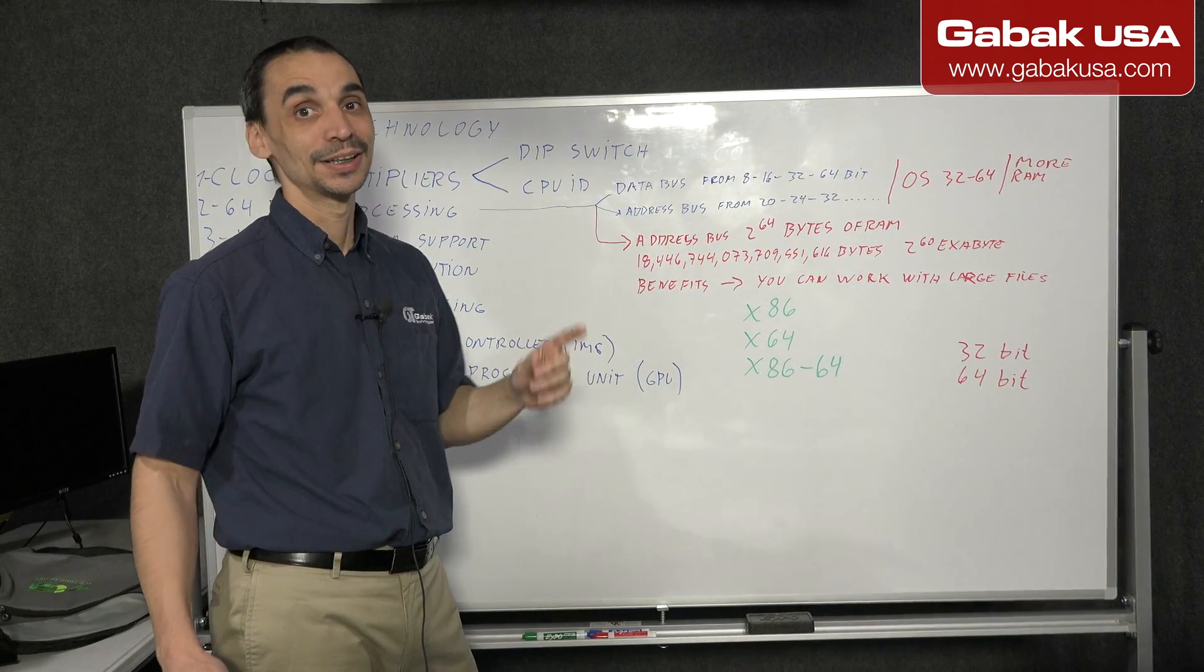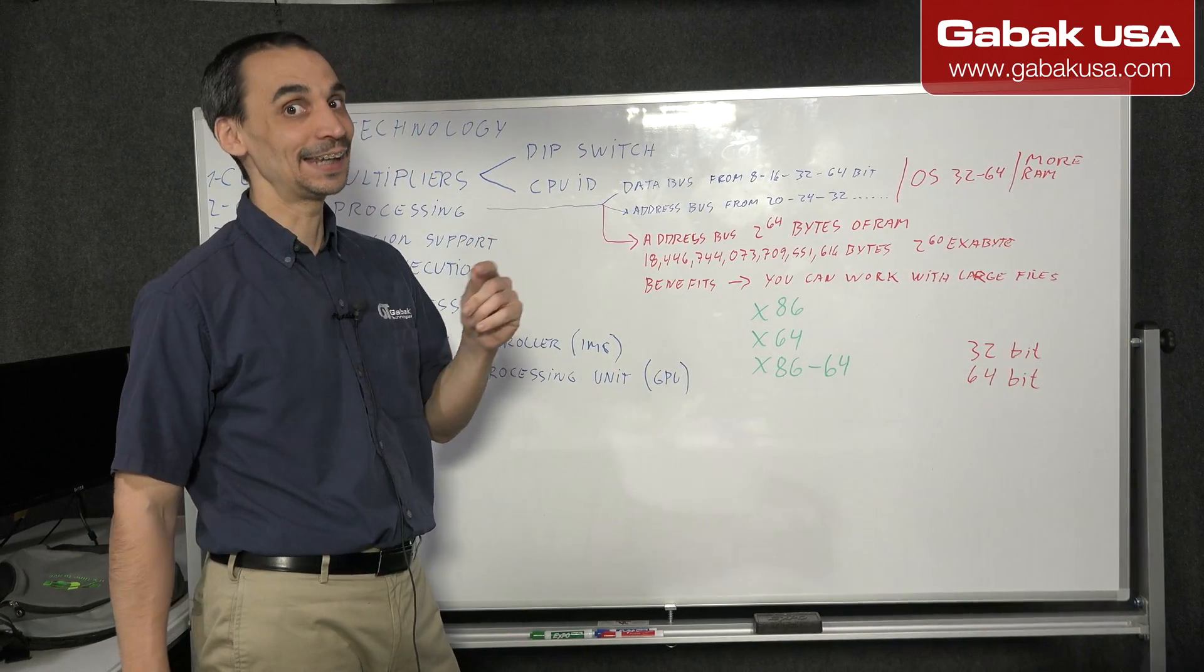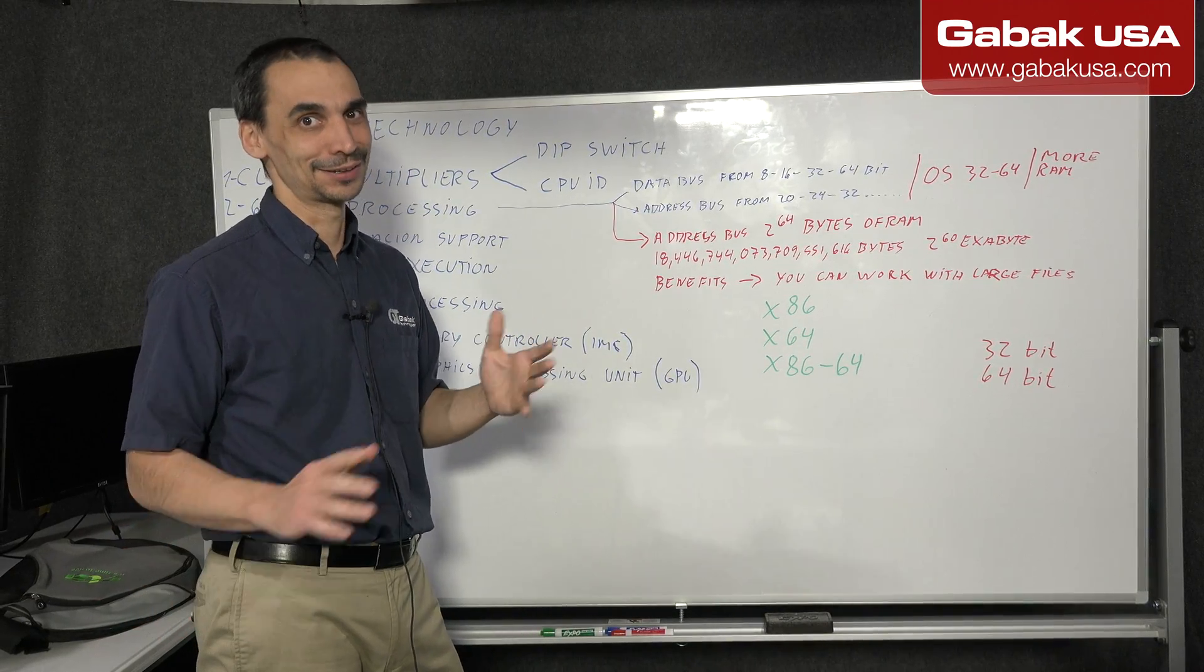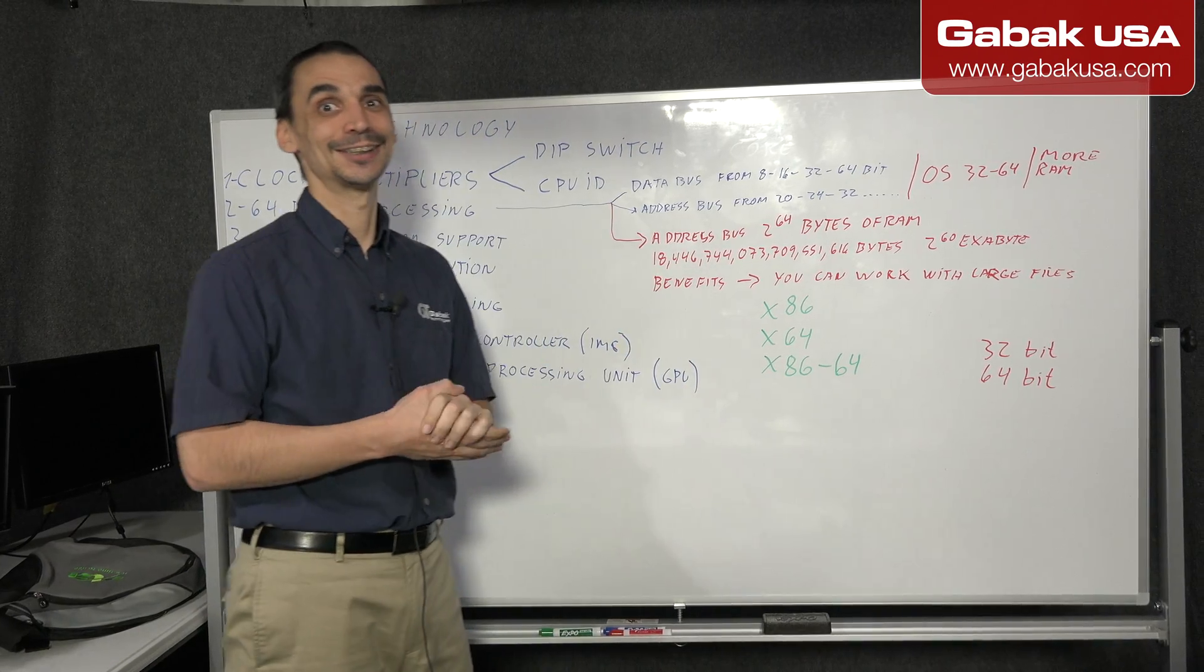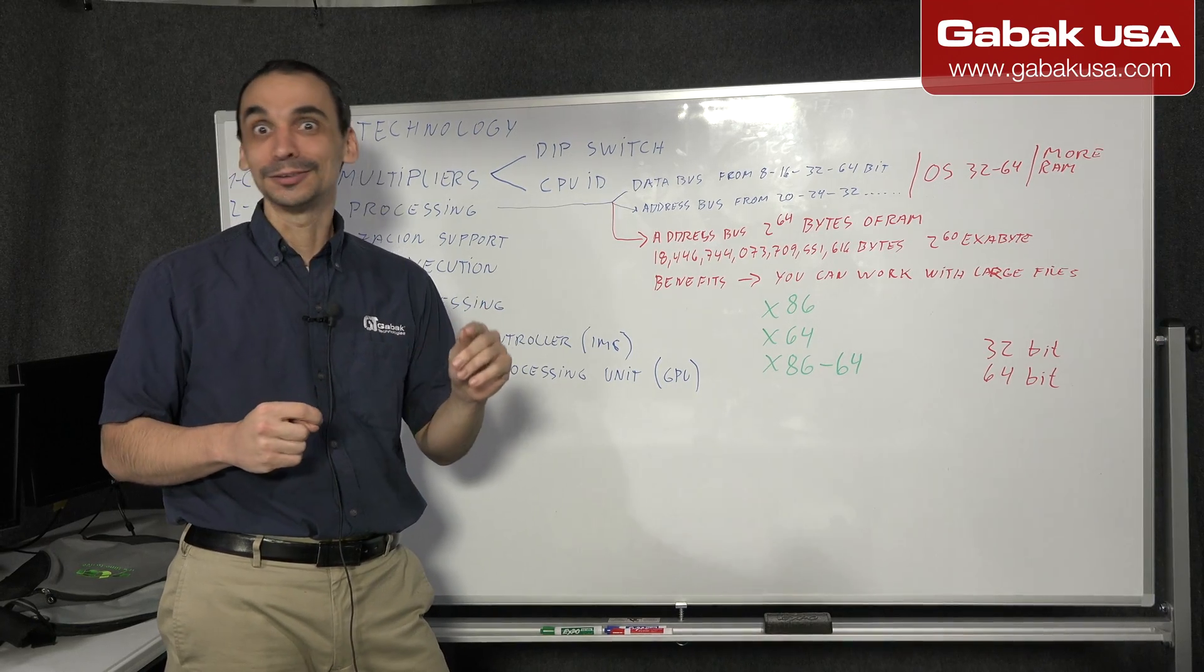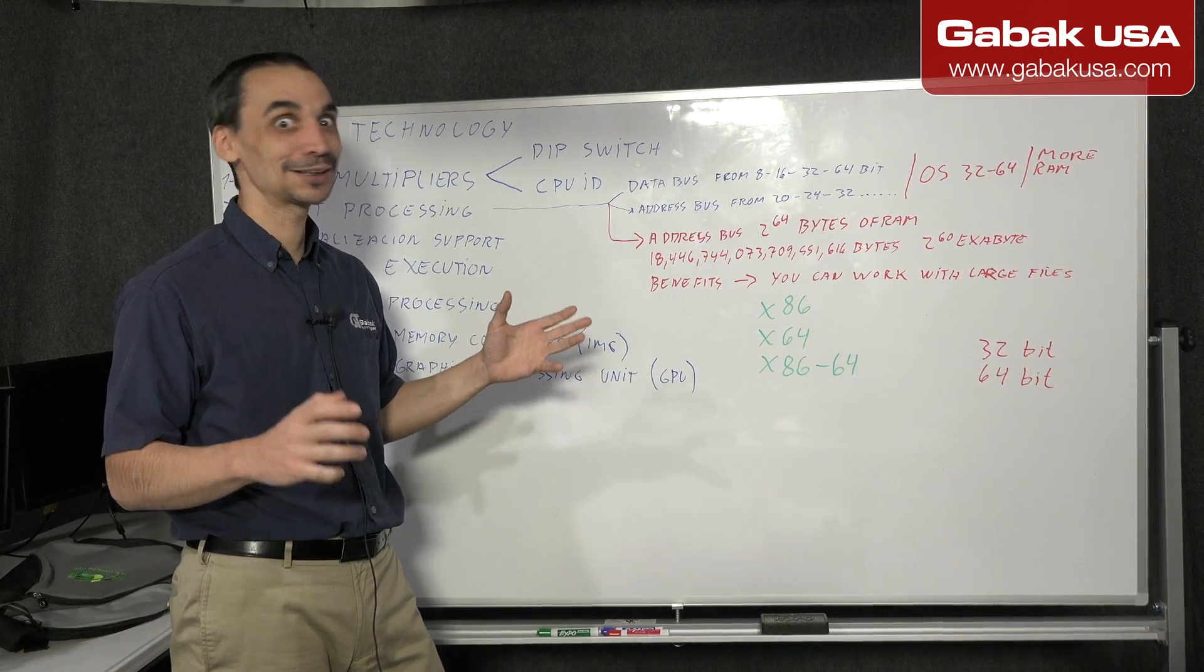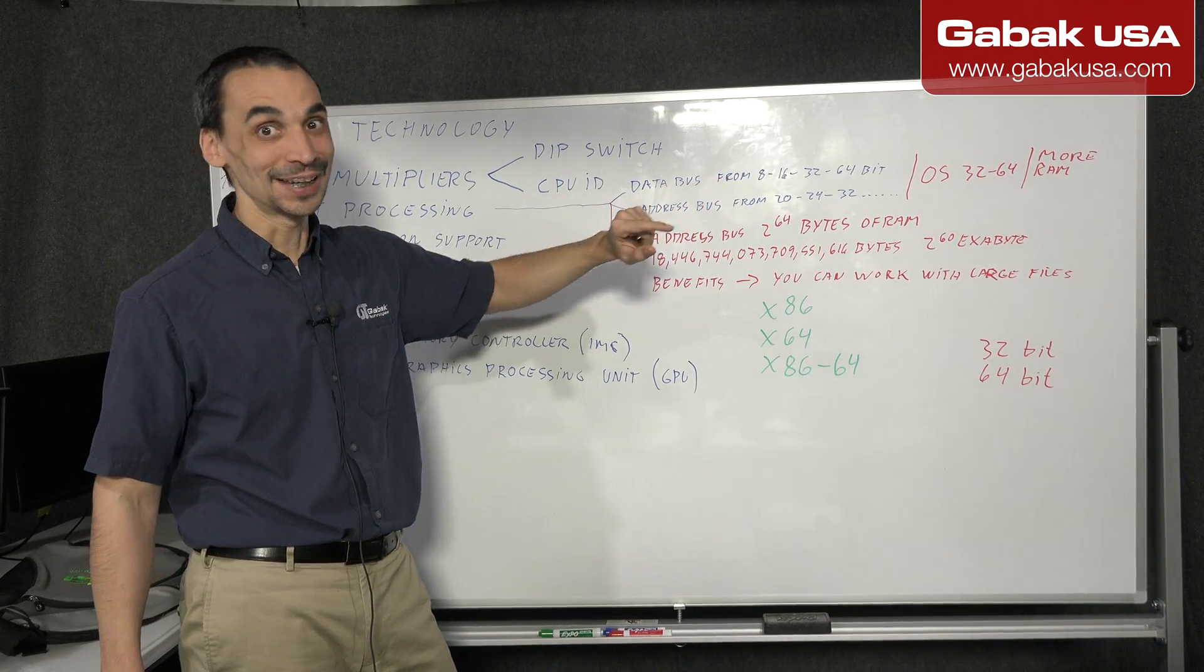At that time, the first microprocessor, the Intel 8088, used to handle around one megabyte, no more than that. Remember in those ages, in the dark ages, the computer may have like 256 kilobytes or maybe 64 kilobytes or something like that. It was not something very big. So that was one of the reasons.